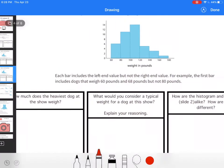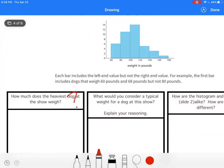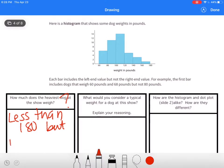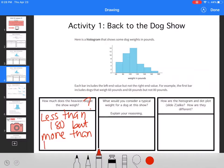How much does the heaviest dog at the show weigh? Well, I'm not really sure again because it doesn't give me exact numbers. I know it has to weigh less than 180 pounds but more than 160 pounds because it would fall right here.